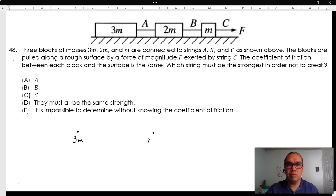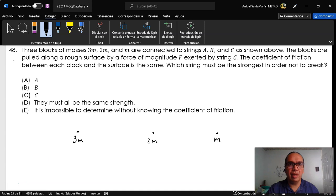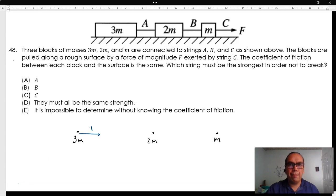Under the circumstances described, the first block experiences only two forces: tension A to the right and friction to the left.